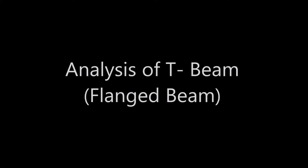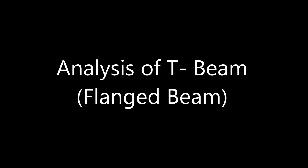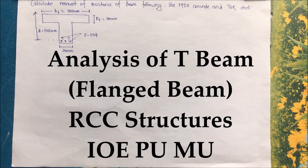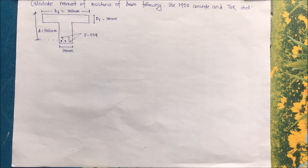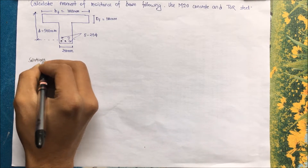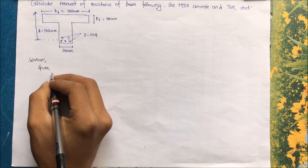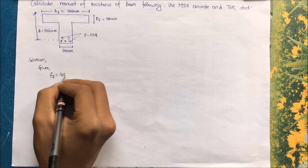Hello, and welcome to another video in the RCC video series. In this video, we will be discussing the analysis of a T-beam, that is a flanged beam, starting with a question that requires calculating the moment of resistance of a beam using M20 grade concrete and Tor steel, which is Fe415 steel. We have a flanged beam section with five bars of 25 mm diameter.